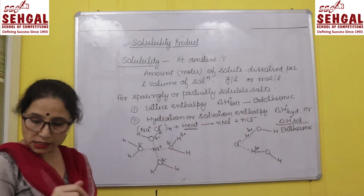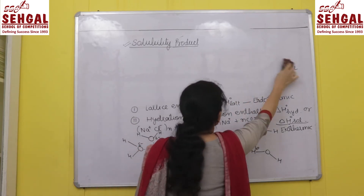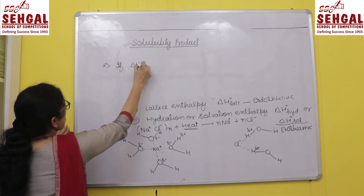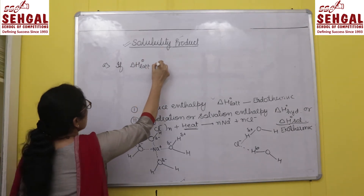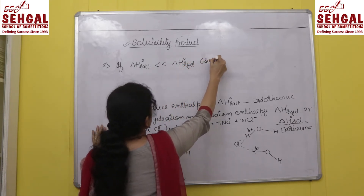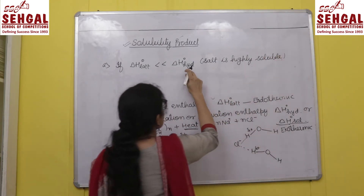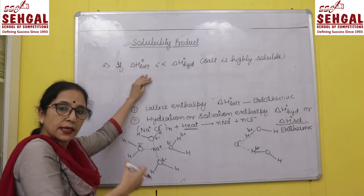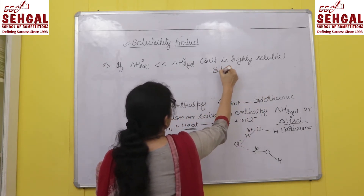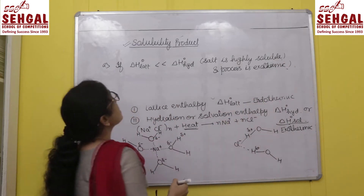There are three conditions applicable when comparing lattice enthalpy and hydration enthalpy. First: if lattice enthalpy ΔH°_lattice is much less than hydration enthalpy ΔH°_hydration, the salt is highly soluble. The hydration enthalpy not only overcomes the lattice enthalpy but is in excess, so the net process is exothermic — salt is highly soluble and dissolution is exothermic as well.